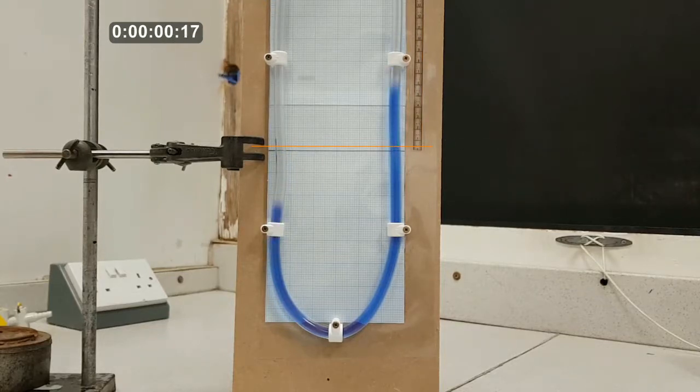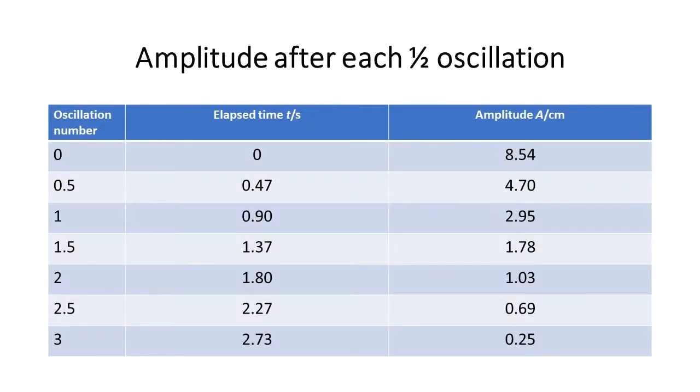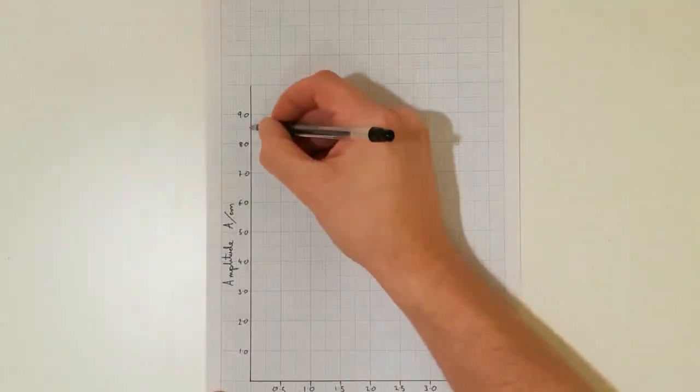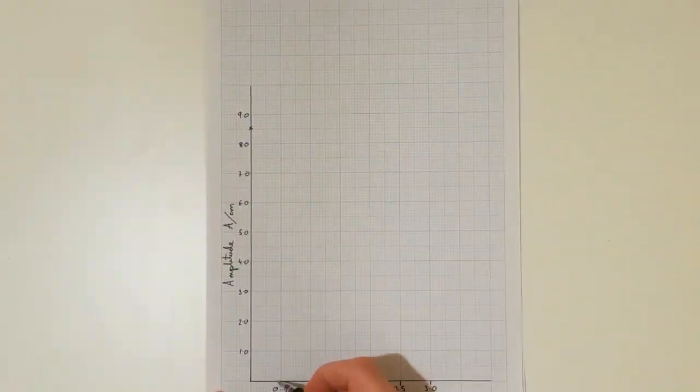We would expect the decay like this to be exponential, but the only way we can be sure about that is to plot a graph of the amplitude against time. I have recorded the amplitude for each half oscillation and the total elapsed time for the oscillator. I am going to plot a graph of amplitude on the y-axis and elapsed time on the x-axis.